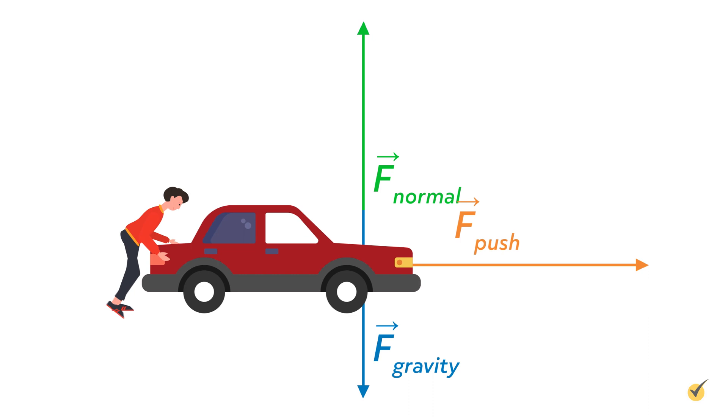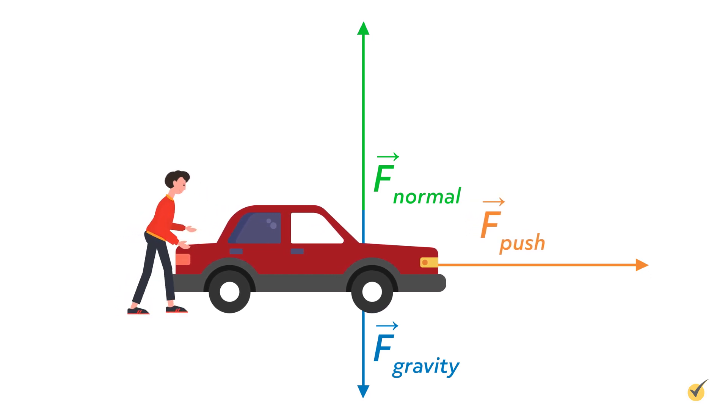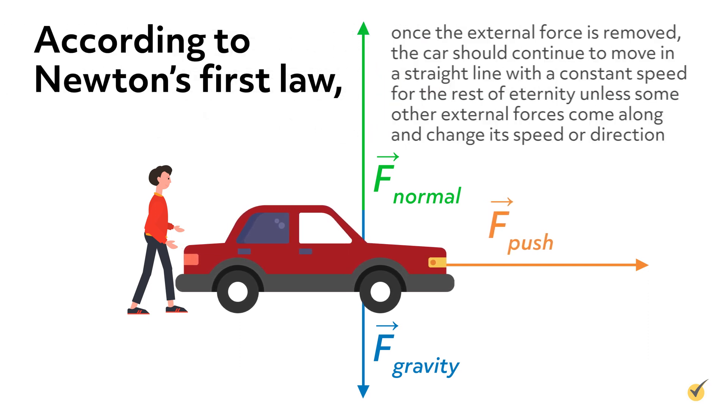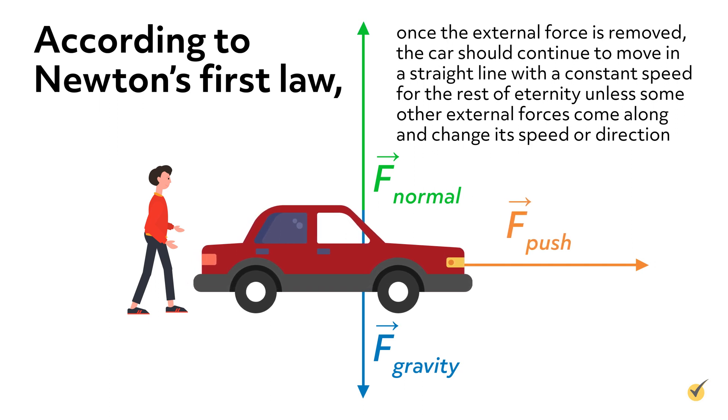Now, let's imagine that someone comes along and pushes the car for a moment, providing an external force and giving it a small velocity. According to Newton's first law, once the external force is removed, the car should continue to move in a straight line with a constant speed for the rest of eternity unless some other external forces come along and change its speed or direction.